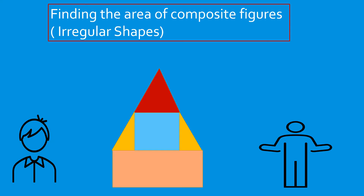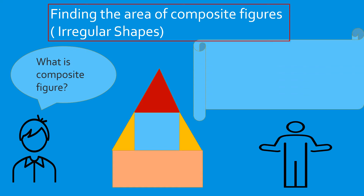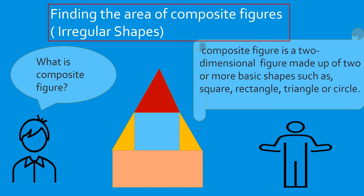In this video, you're going to learn about finding the area of composite figures, also known as irregular shapes. A composite figure is a two-dimensional figure made up of two or more basic shapes such as square, rectangle, triangle, or circle.